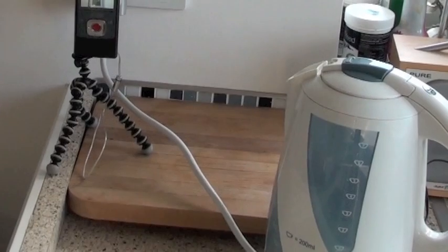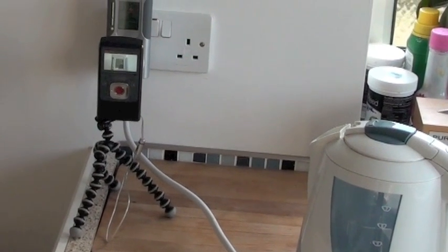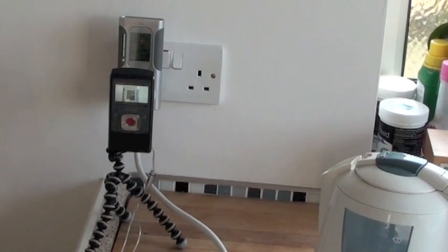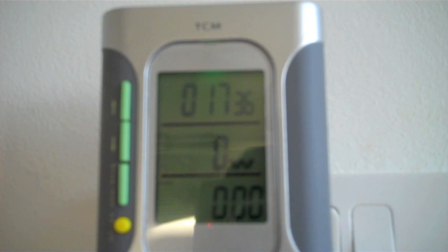When we heat the water up, we need to know exactly how much energy we're supplying. To do this, we're using a digital energy meter, which has a second camera in front of it. On the top line is a time measurement. On the second line, the power supplied. And on the third line, the total energy supplied.